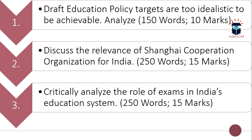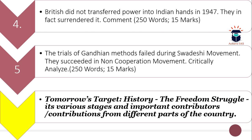These three questions are from your current/dynamic part. The fourth and fifth questions are from the static part. The fourth question is: 'British did not transfer power into Indian hands in 1947 — they in fact surrendered it. Comment.' You have to understand the statement and write the answer. Word limit is 250 and maximum marks are 15.